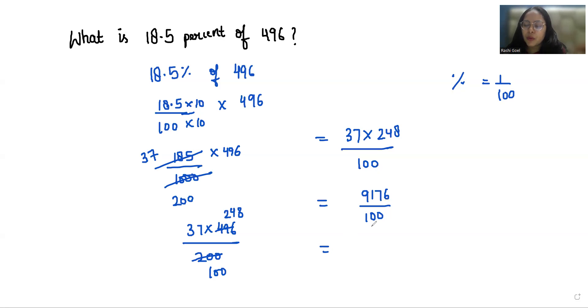Now we are going to put the decimal depending upon the number of zeros in denominator. There are two zeros, so we put the decimal before two digits from the end.